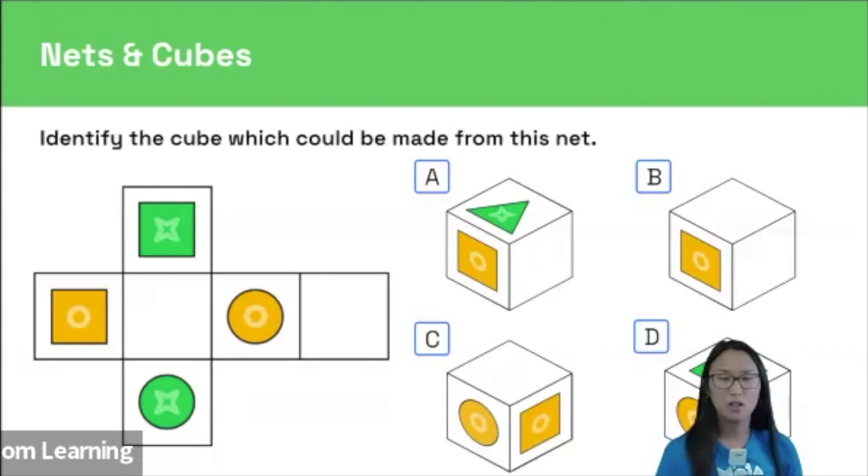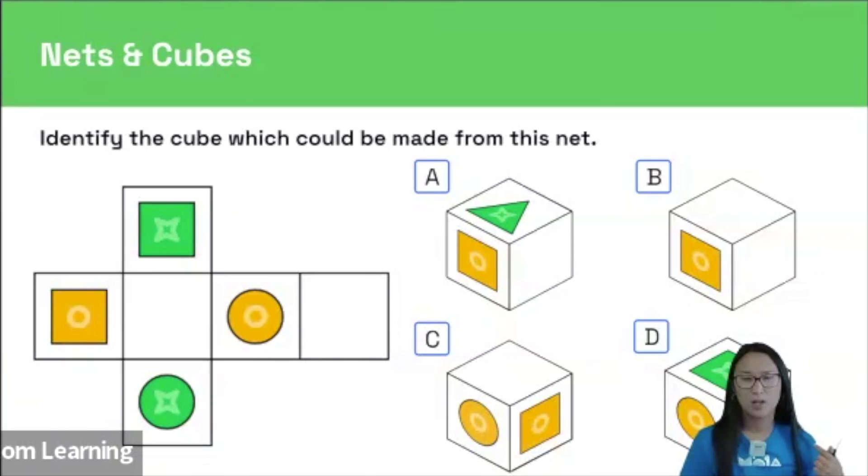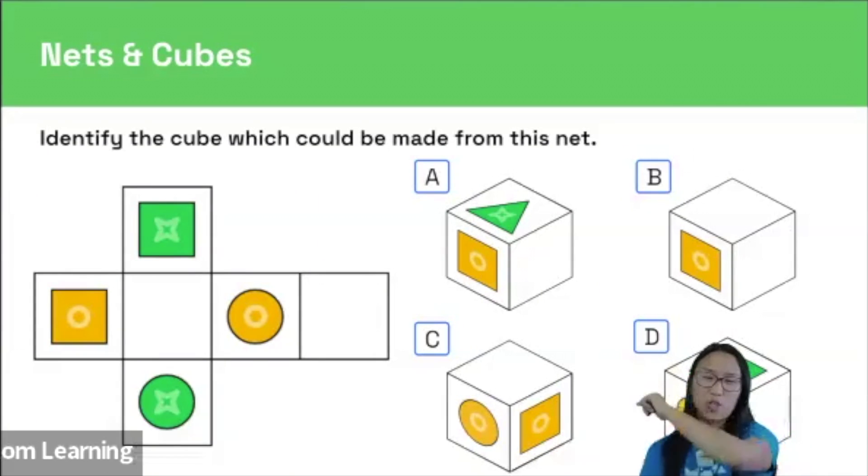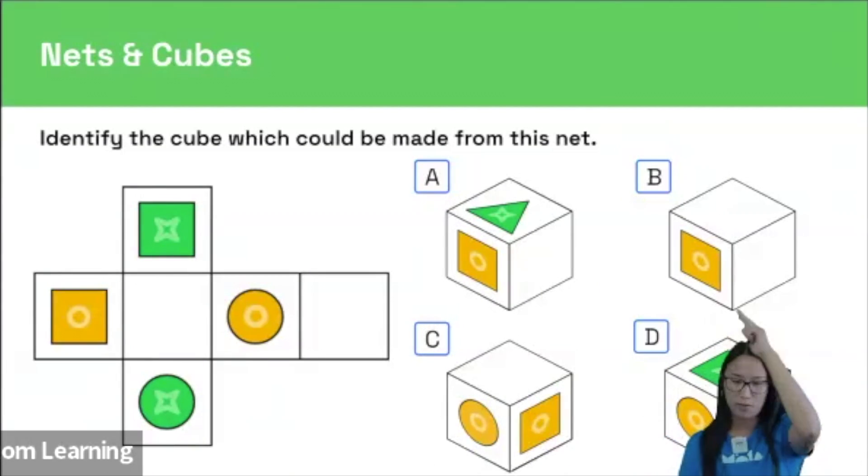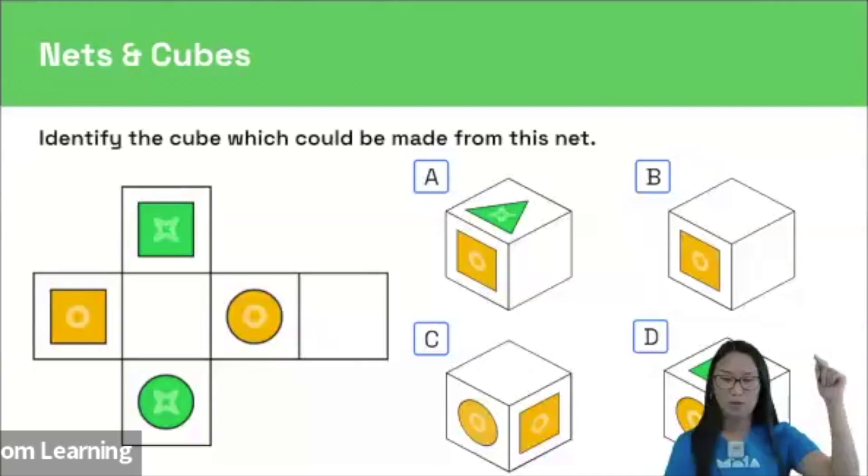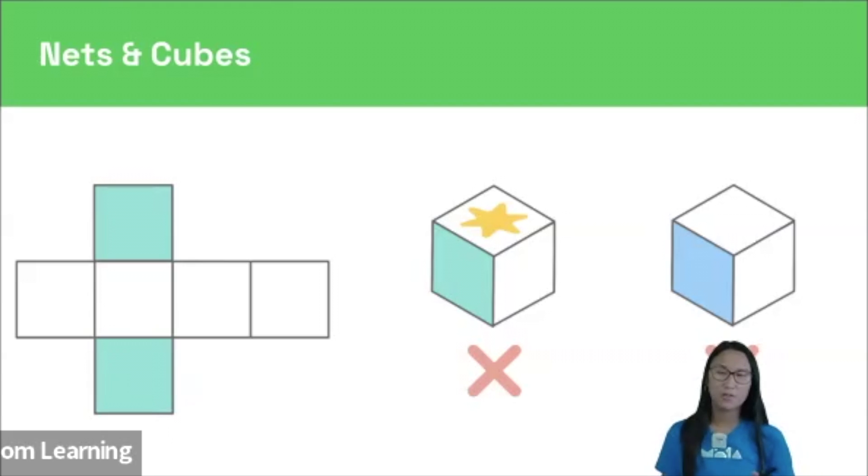In nets and cubes questions, you will be asked to identify the cubes that either could or could not have been made from folding a given net. So here is an example. We have our crucifix or cross-shaped net on the left and then we've got some cubes over here. And what we have to do is figure out which of these cubes could be made from the net. And to figure that out, we can use three key rules.